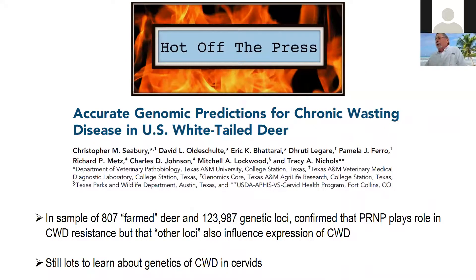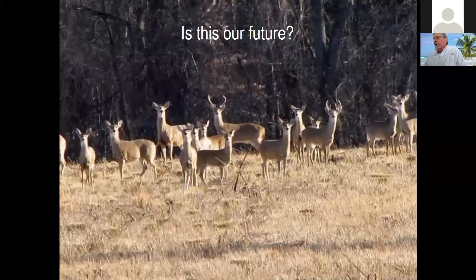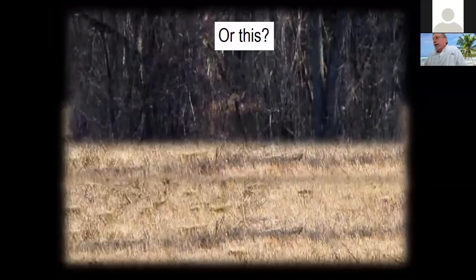We've talked a lot about the prion gene PRNP, which seems to play a role in resistance. A recent study of farm deer also found that other genetic factors play a role in resistance, so we still have a lot to learn about the genetics of CWD in cervids. Hopefully it won't be as big a problem — we'd like to see a healthy future for deer herds.